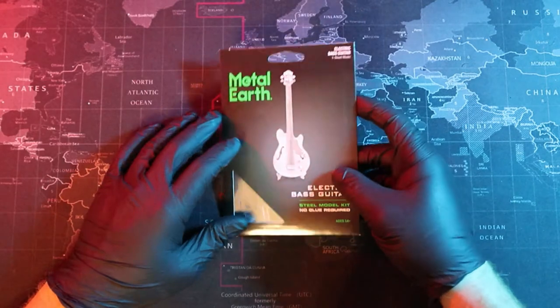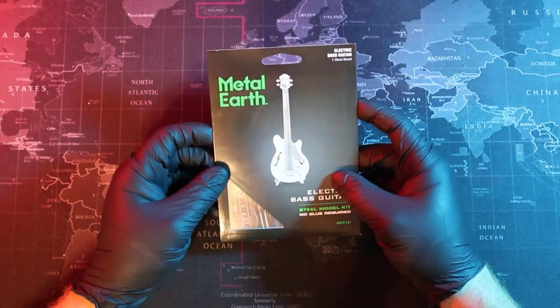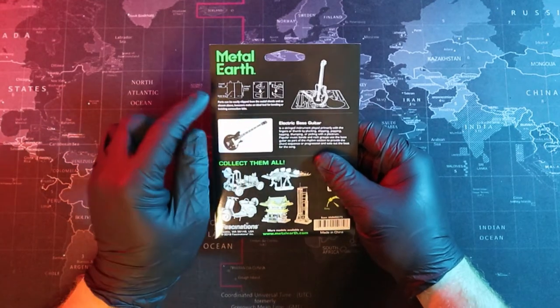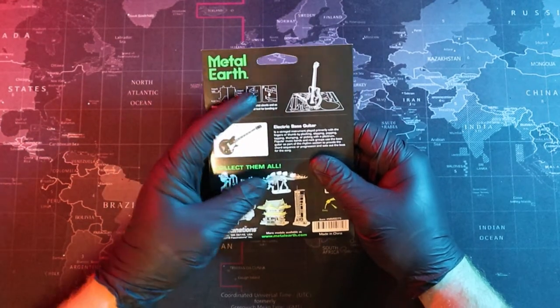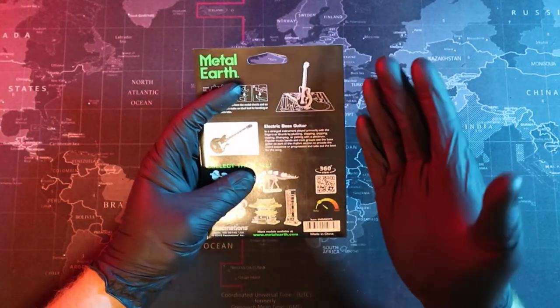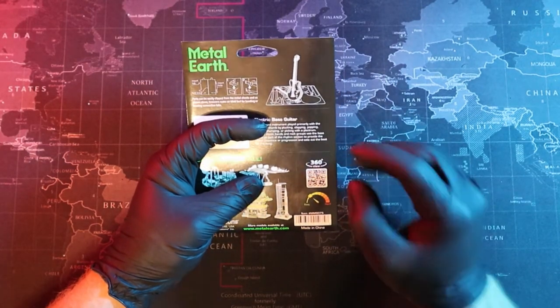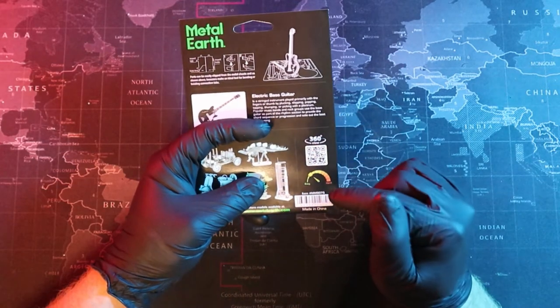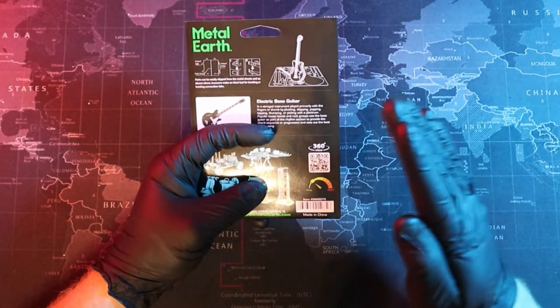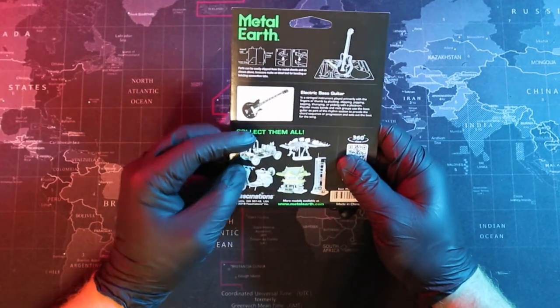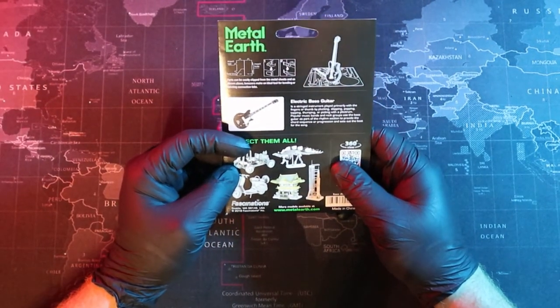GrooveBuilders, welcome to the workbench. We have our Metal Earth Electric Bass Guitar. Let's go ahead and take a look at the back. On the back, we have some instructions on how to build our model, followed by some information on what the electric guitar is. Then, just below that, we have a QR code, which we can scan to get a 360 look at our model. And at the bottom here, we have a difficulty rating of just over easy. This should be pretty straightforward. Finally, on the left-hand side here, we get a look at some other models that Metal Earth offers.